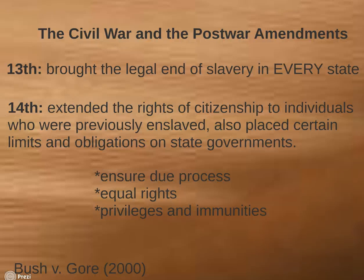The 14th Amendment authorizes the national government to ensure that state governments follow fair procedures — due process — before taking away a person's life, liberties, or pursuit of happiness, and that the state guarantees all people the same rights — equal protection of the law — to life, liberties, and the pursuit of happiness, without discrimination. In addition, the amendment guarantees the privileges and immunities of U.S. citizenship to all citizens in all states.